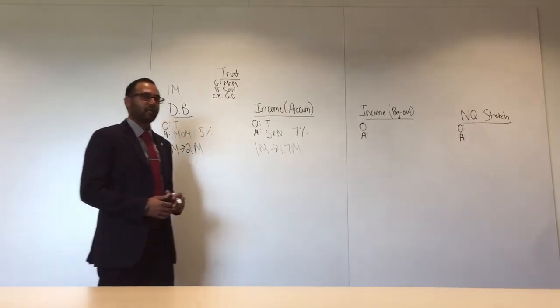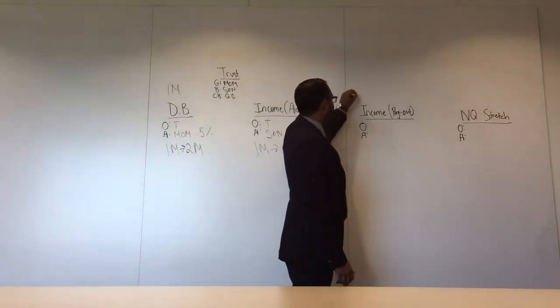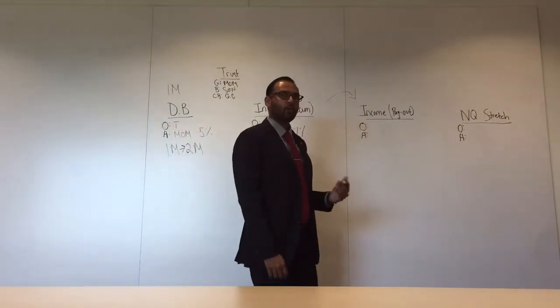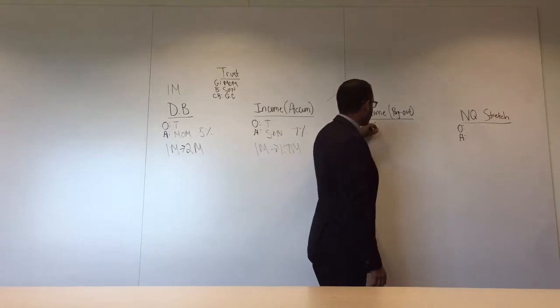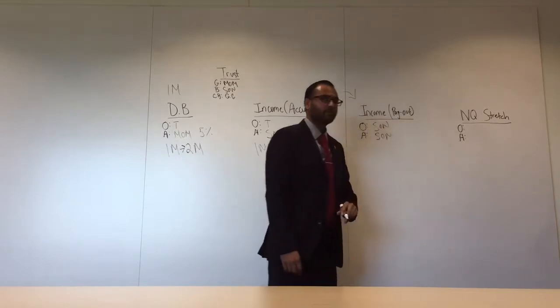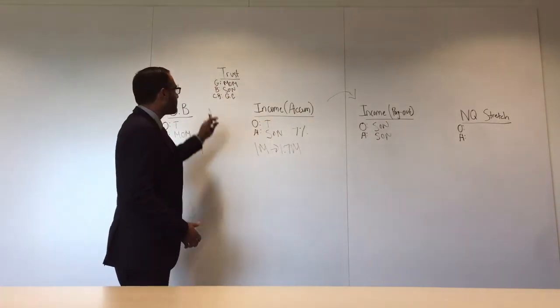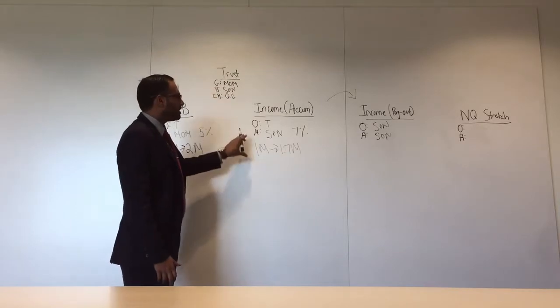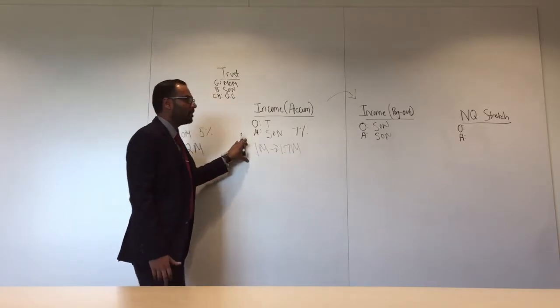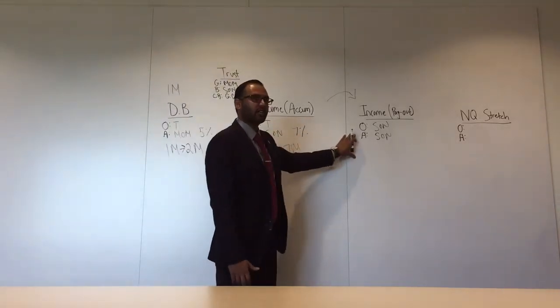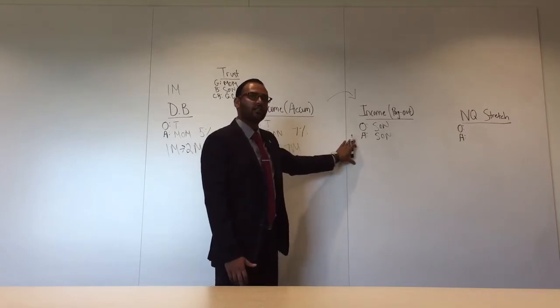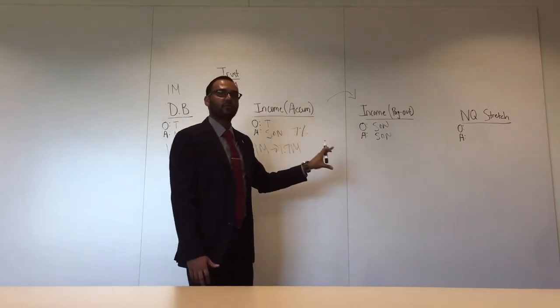Let's say mom passes away and we're entering the payout phase for the son. What we do here is we re-register the policy with the son as the owner and the son as the annuitant. What this is called is an in-kind distribution of trust assets, and as long as the beneficiary of the trust is the annuitant on the original policy, we're able to re-register the contract as the son as the owner and son as the annuitant without incurring a taxable event.